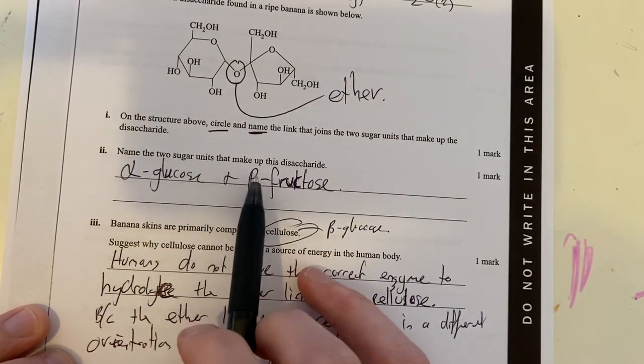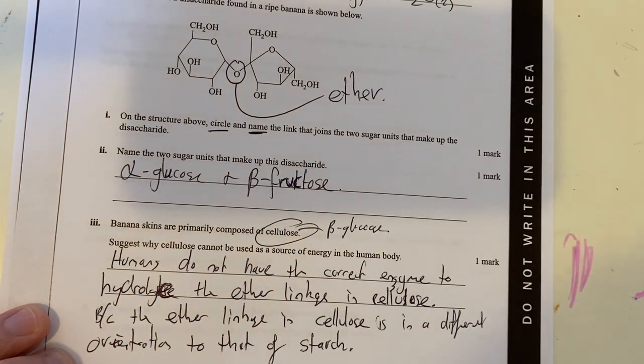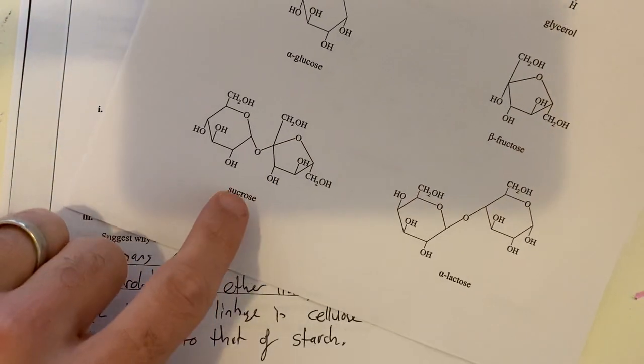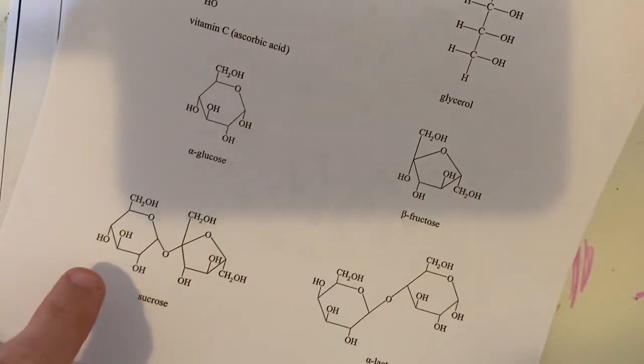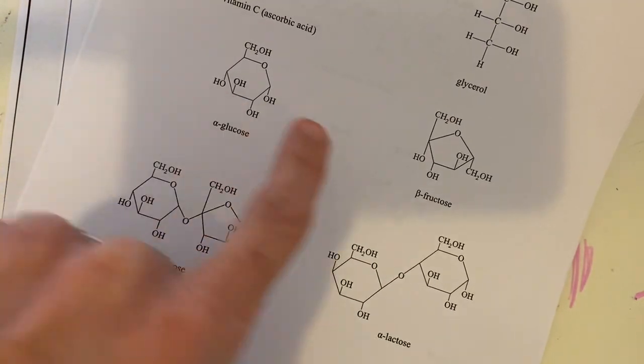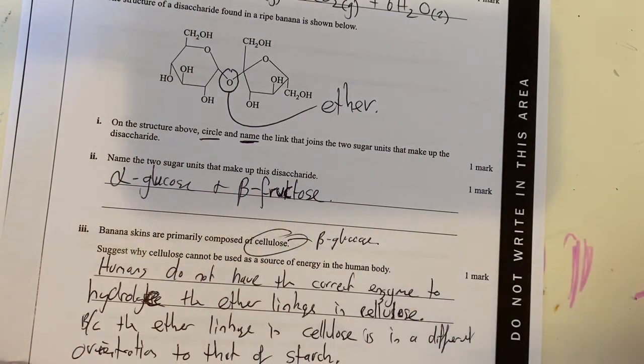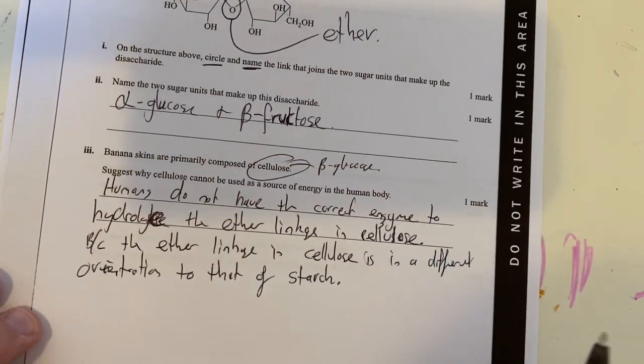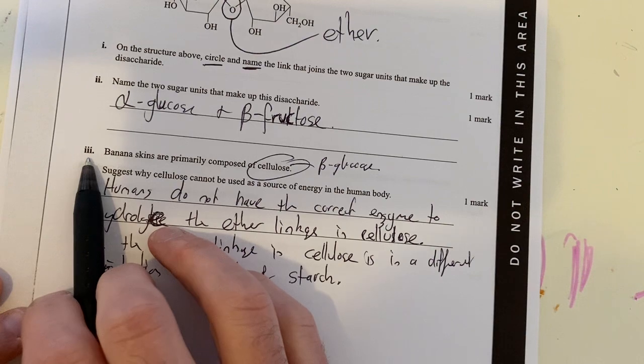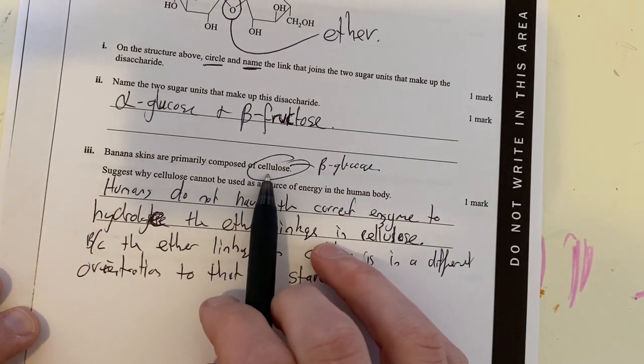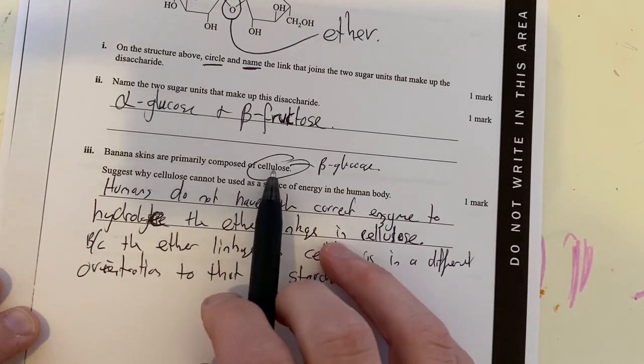Name two sugar units making up this disaccharide. If I go to my data booklet, I can see it's sucrose, but I can also see that sucrose is made from alpha-glucose and beta-fructose. So it's just a matter of copying those two names from your data booklet.